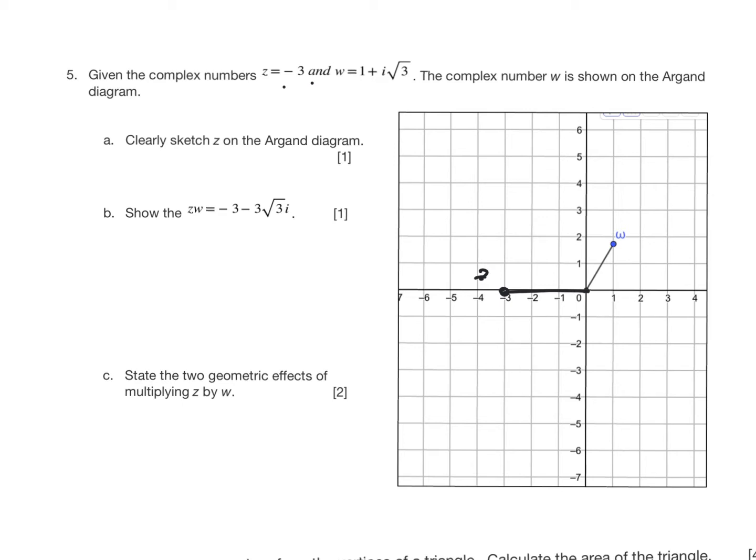And so we want to show that zw is this. Well, that's easy enough to do. I'm going to go negative 3 times 1 plus i root 3, and it is simply negative 3 minus 3i root 3.